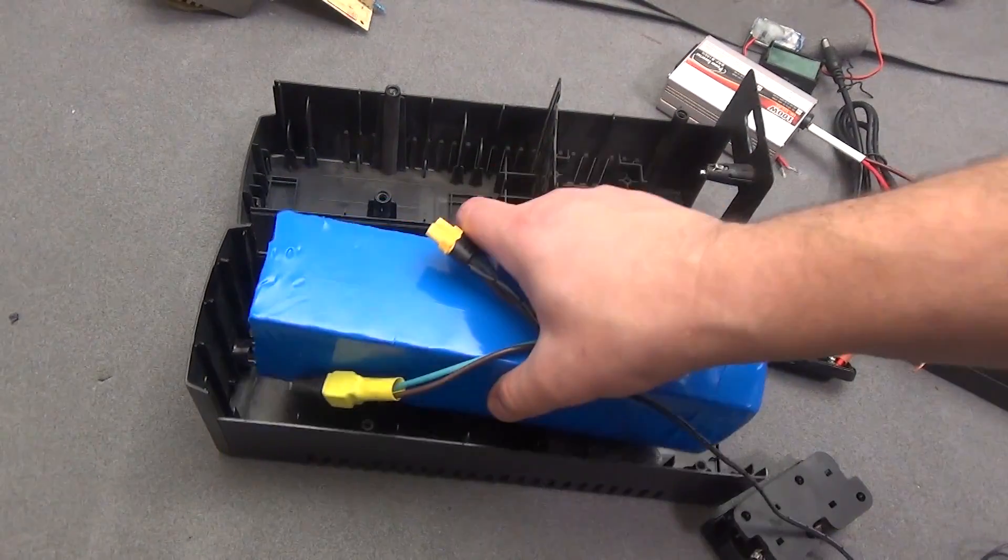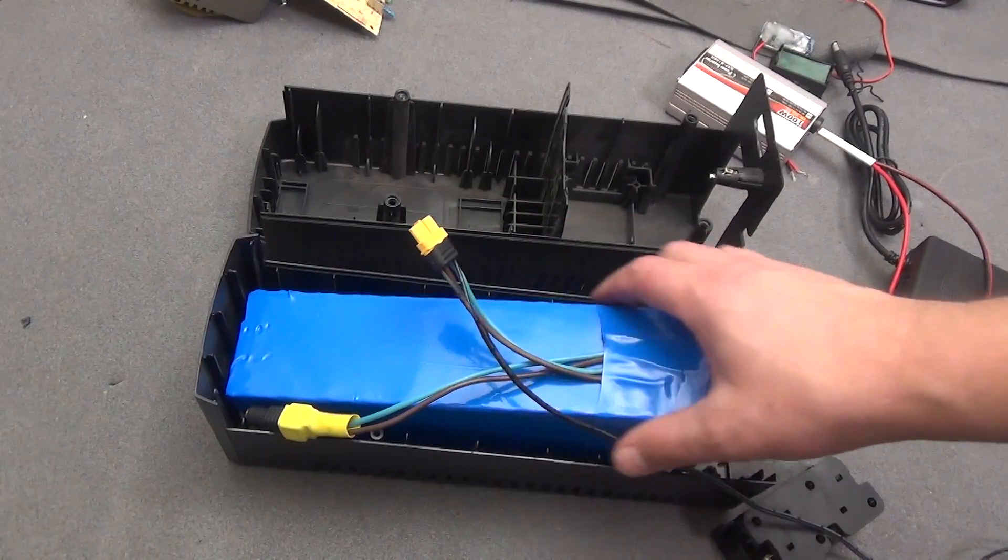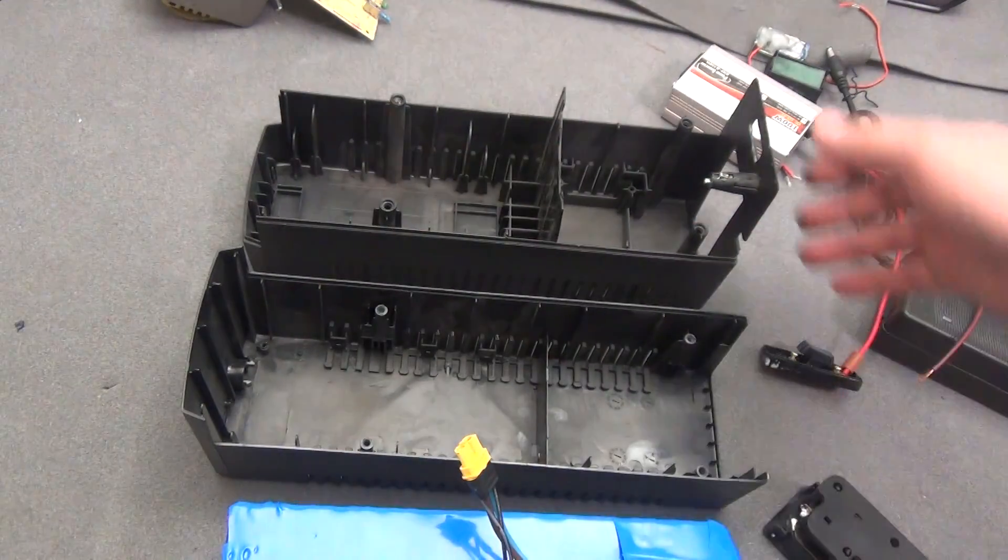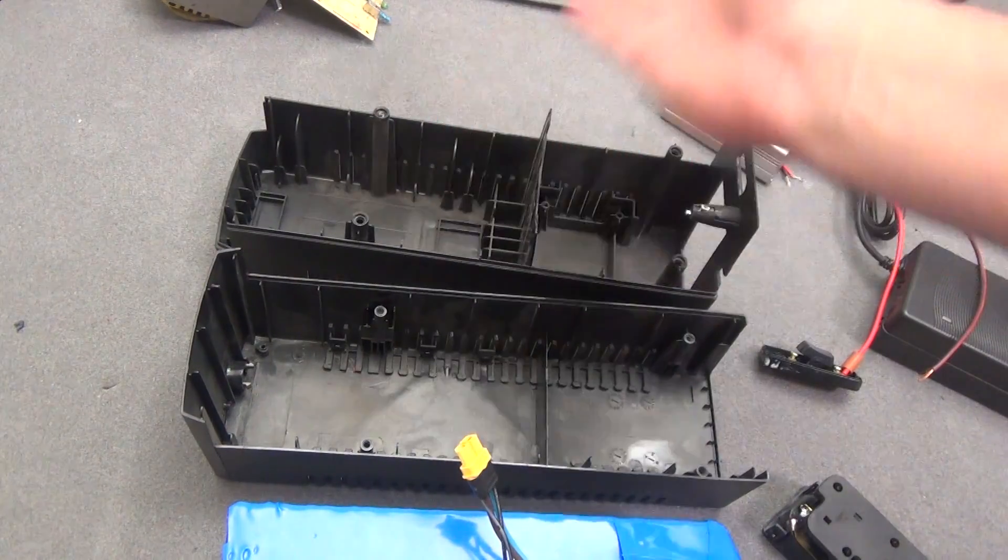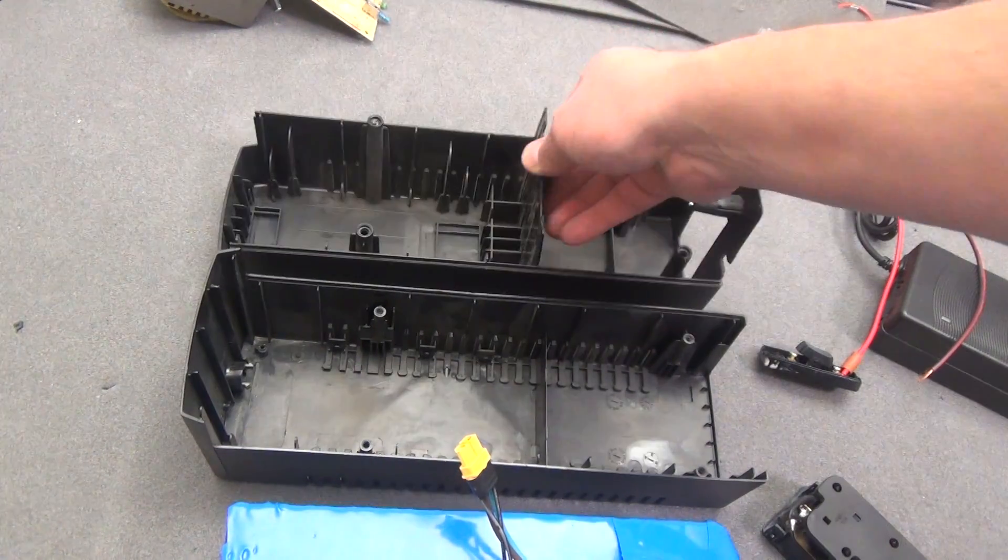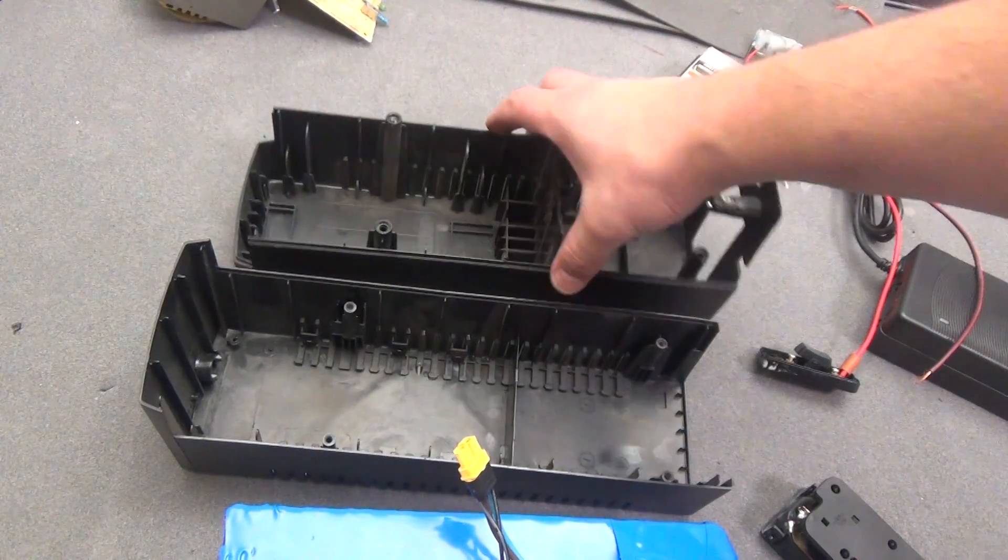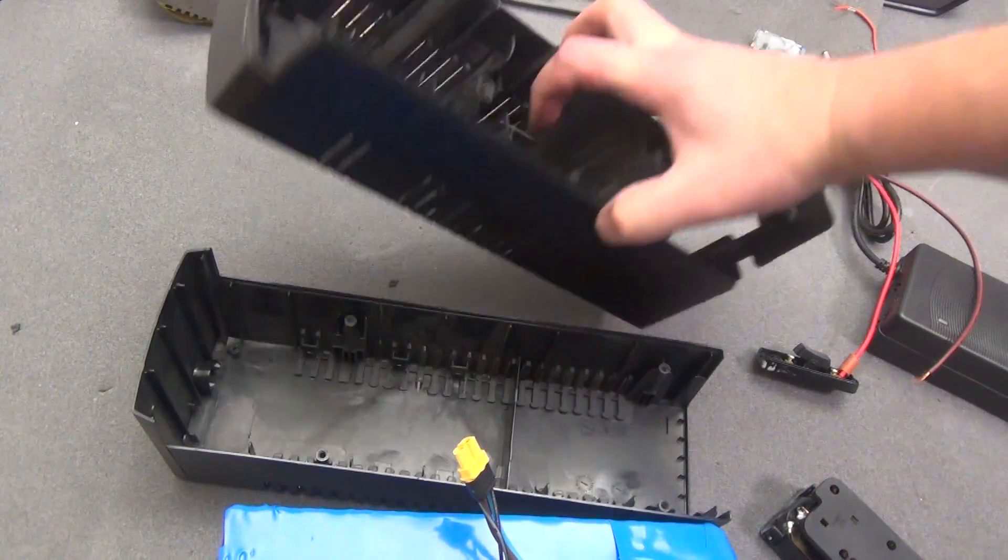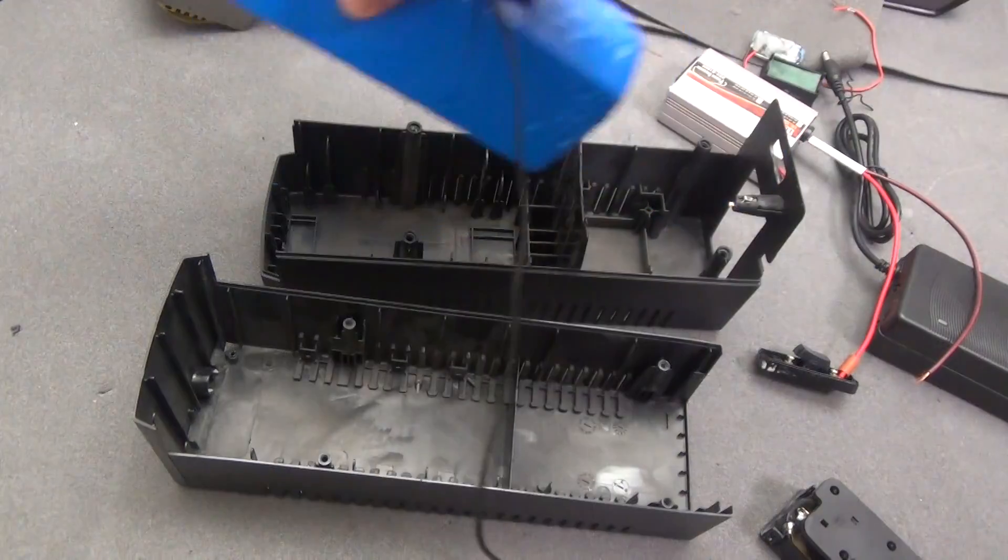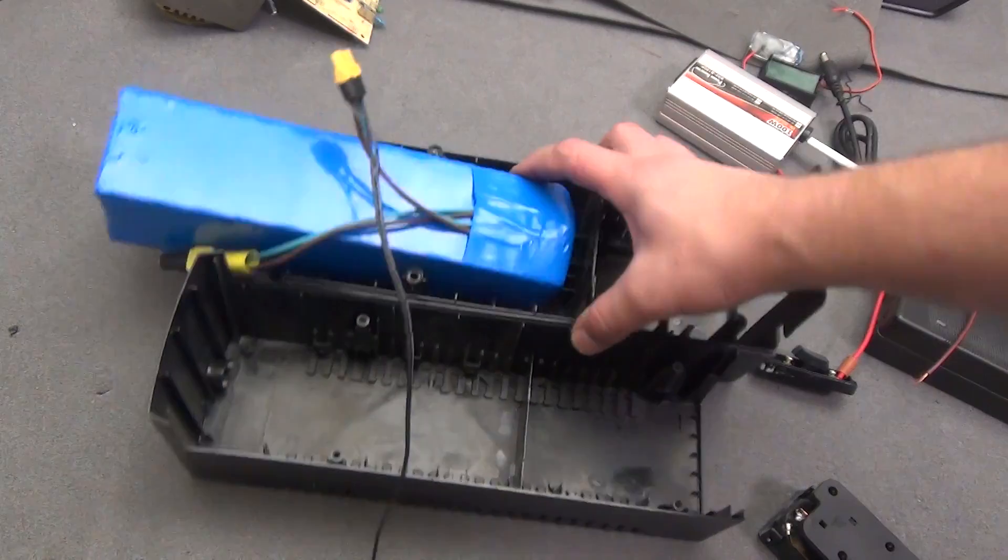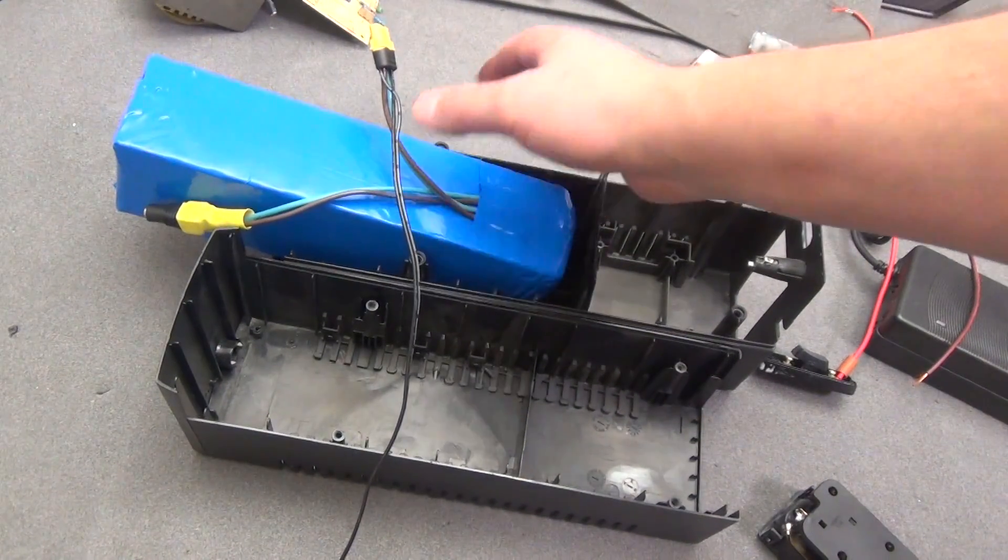And this is what our uninterruptible power supply case looks like without the insides. I carefully pulled everything out, unsoldered the socket, if necessary, everything can be put back. The only thing is that these partitions will need to be removed, and this thing will need to be removed, because it will get in the way. But in fact, this battery is located as prescribed, since it is even without fastening, a very successful case.